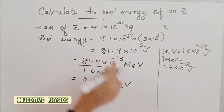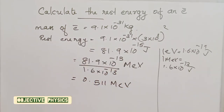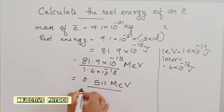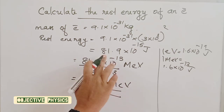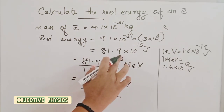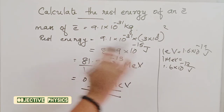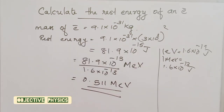Therefore, the rest energy of an electron is 0.511 MeV (mega electron volt) or 81.9 × 10⁻¹⁴ joule.